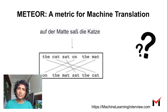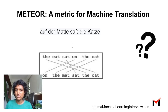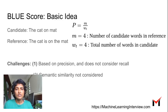METEOR is a popular metric for machine translation. To understand why we need evaluation metrics, consider a sentence in German translated to English using your model, alongside a reference sentence showing the actual translation. The idea behind machine translation evaluation metrics is to compare the candidate sentence your model generated with the reference sentence and give a score.